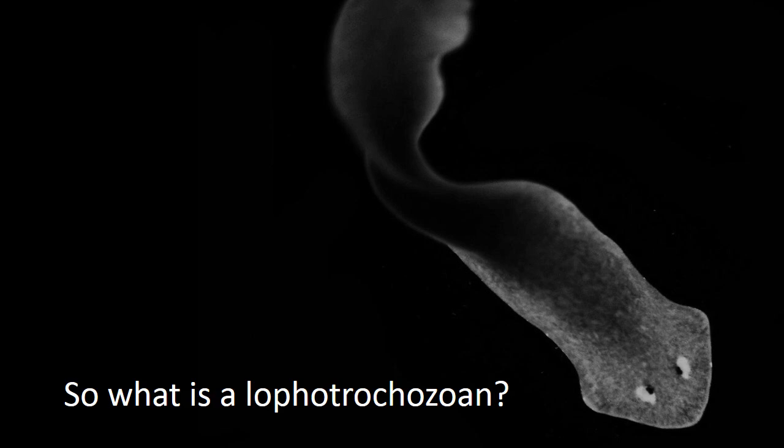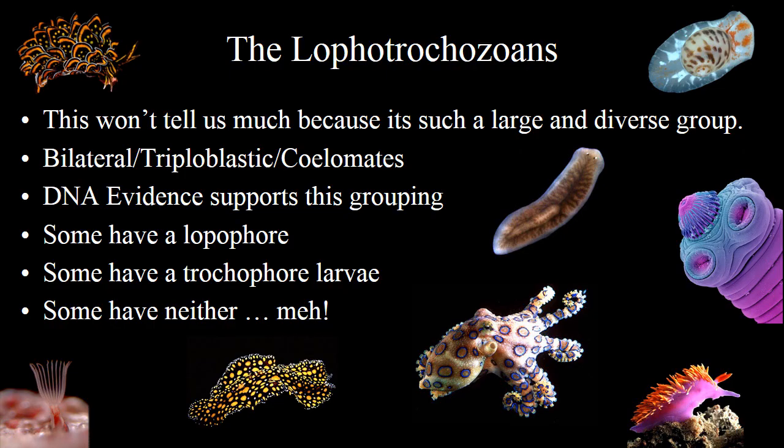So the question is: what is a Lophotrochozoan and how do you distinguish them from the rest of Animalia? Well, this won't really tell us much because it's a very large and diverse group. The organisms are bilateral and triploblastic, meaning they came from three germ layers in the embryo — the endoderm, mesoderm, and ectoderm. They are coelomates or pseudocoelomates, meaning they do have cavities around their organ systems. DNA evidence is what really supports this grouping, so there's not one key characteristic that they all share.